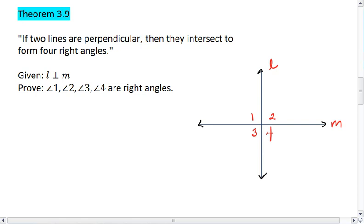Theorem 3.9 tells us that if two lines are perpendicular, then they intersect to form four right angles. So basically, if we're given two lines, L and M, and we know that L is perpendicular to M,